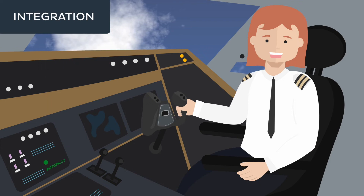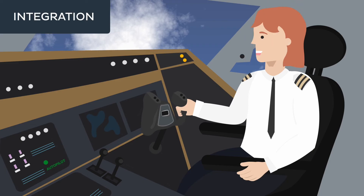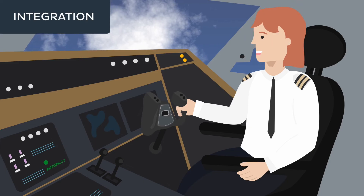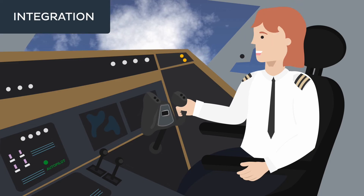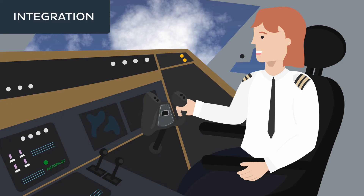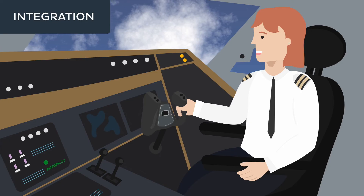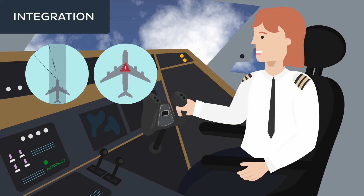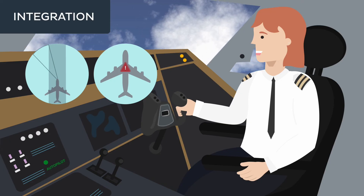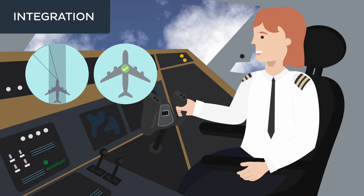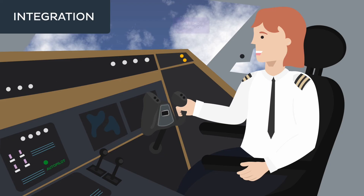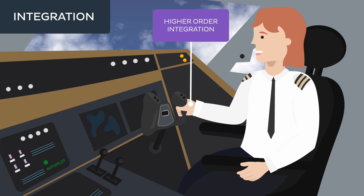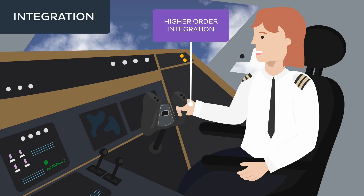While the flight management computer keeps the plane flying smoothly, the pilot actively flying engages with the environment, making decisions based on a broader understanding of the situation. They can deviate from the predetermined path, respond to unforeseen challenges, and make strategic choices to ensure overall safety — just like how our higher order integrative processes evaluate the environment around us, shape our responses, and ensure adaptability.